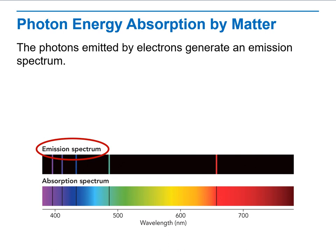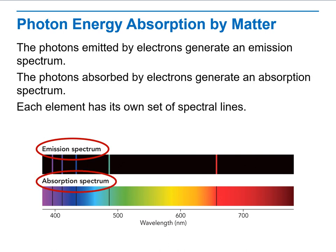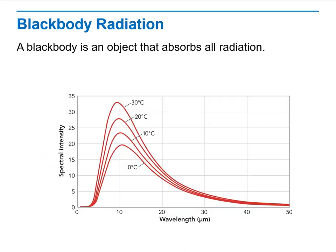We can learn what elements make up the stars or objects. Now, black body radiation. A black body is a theoretical object that absorbs all radiation that falls upon it. It is theoretical because there are no objects that absorb absolutely all radiation that falls upon them. A black body is a model to describe an object if it could, in fact, absorb all radiation.